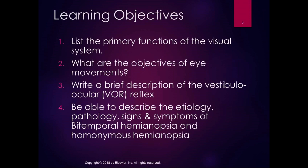The learning objectives: I want you to be able to list the primary functions of the visual system — there are four of them. I want you to briefly be able to describe the vestibular ocular reflex, and then describe the etiology, pathology, signs, and symptoms of bitemporal hemianopsia, also known as bitemporal hemianopia, and homonymous hemianopsia, or hemianopia. Both spellings are correct.